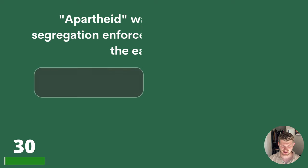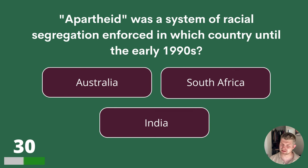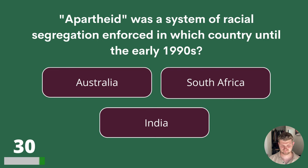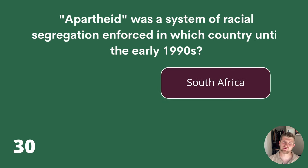Question 30. Apartheid was a system of racial segregation enforced in which country until the early 1990s? Australia, South Africa or India? The answer is South Africa.